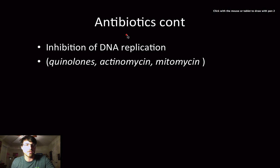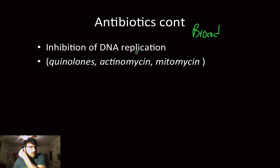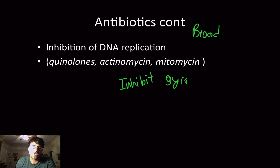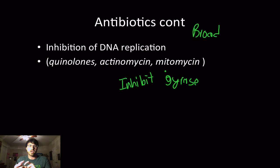Other antibiotics — generally classified as broad spectrum — inhibit DNA replication. These include the quinolones, actinomycin, mitomycin, and others. They inhibit gyrase, or topoisomerase depending on the species. When the replisome is replicating DNA, it causes coiling, and gyrase makes intentional cuts to prevent over-coiling. If you inhibit gyrase, the bacteria can't reproduce.